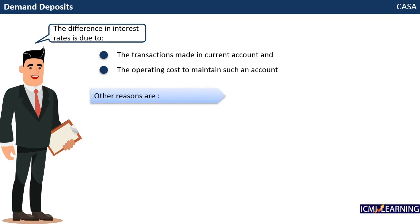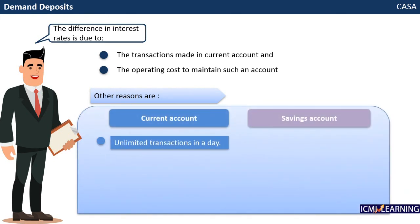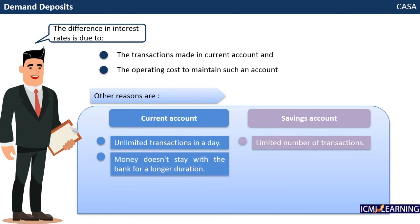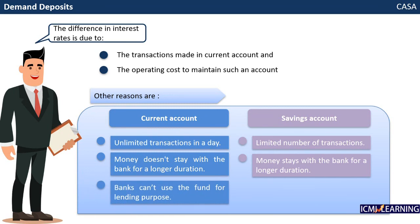Other reasons are: in a current account, there can be unlimited transactions in a day, whereas in a savings account, there are only a limited number of transactions. The money does not stay with the bank for a longer duration in a current account, whereas the money stays with the bank for a longer duration in a savings account. Banks cannot use the funds for lending purposes from a current account, whereas banks can use the funds for lending purposes from a savings account.